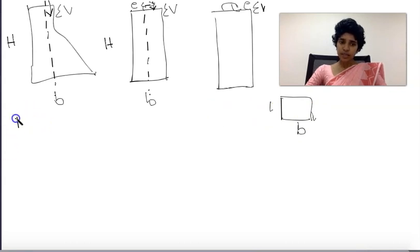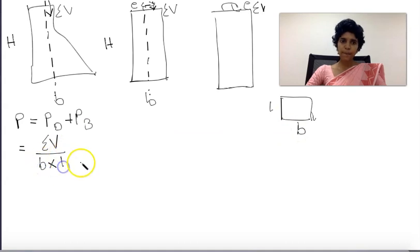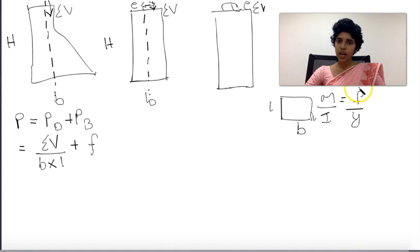From normal stress theory, stress equals the sum of direct stress plus bending stress. The direct stress is force divided by area. The bending stress comes from the bending equation: m by i equals f by y.